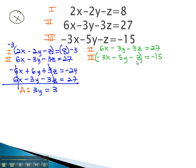By multiplying the second equation there by 2, we'll end up with a negative 6x to eliminate it a second time. The first equation is unchanged, 6x minus 3y minus 3z equals 27. The second equation, when we multiply by 2, is negative 6x minus 10y minus 2z equals negative 30.